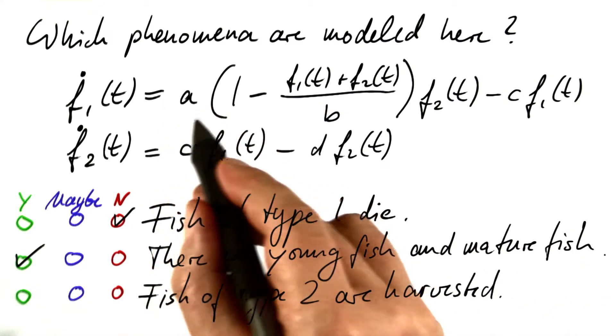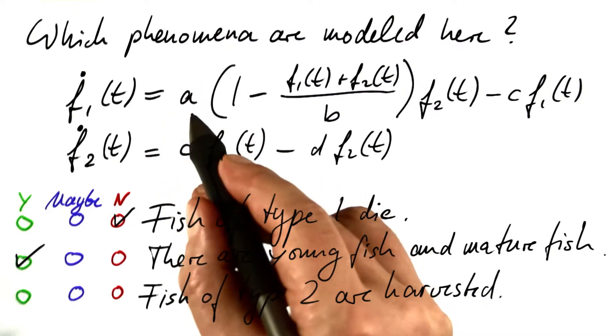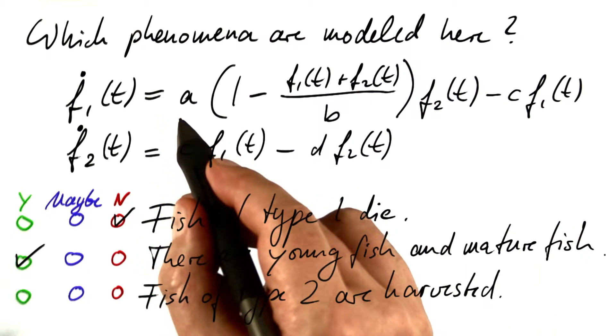This growth rate can model both births and deaths. It takes care of the difference. So in a way we have taken care of deaths and births from the beginning.